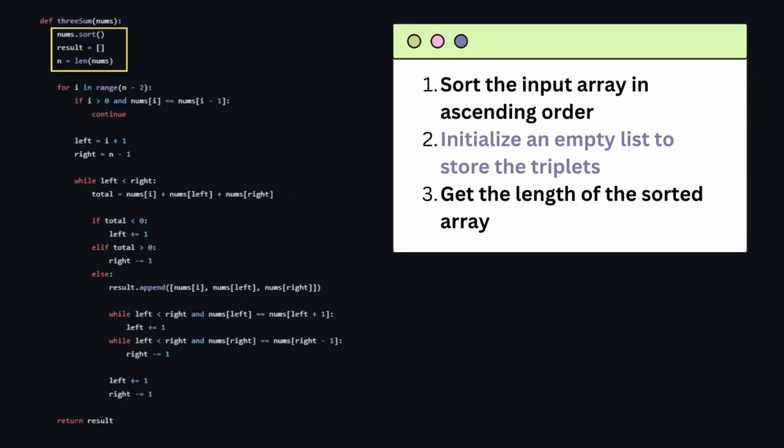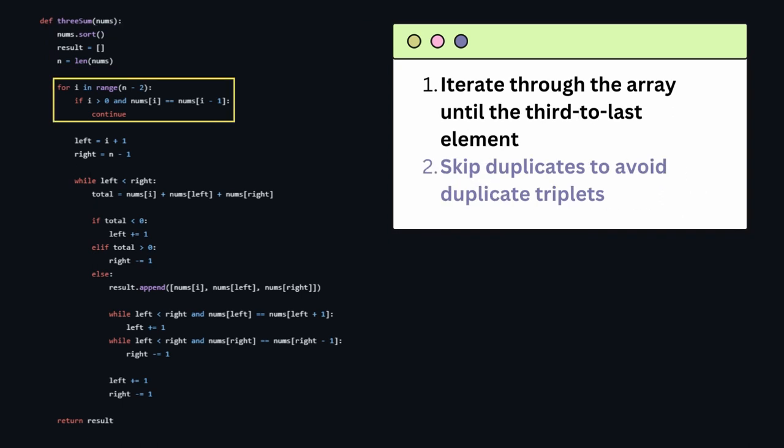First, let's look at the code. We sort the array and initialize an empty list to store the triplets. Then we get the length of the sorted array. Next, we iterate through the array until the third to last element, and we skip to avoid duplicates.